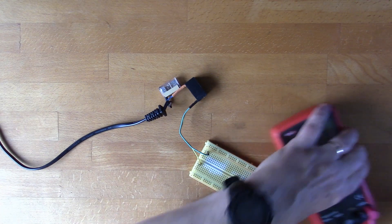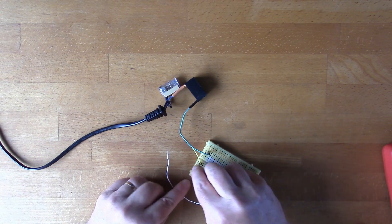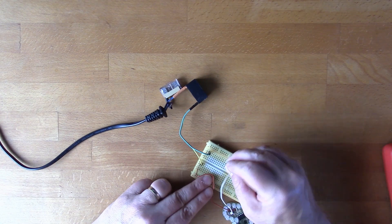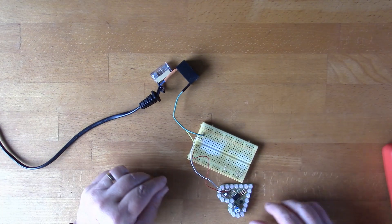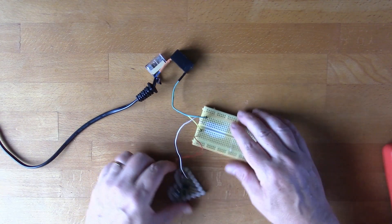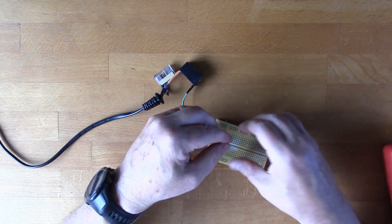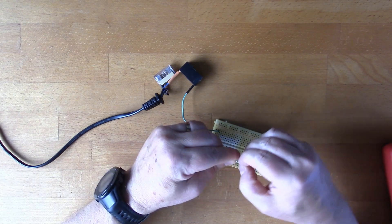OK, so the yellow is positive. There we go, there's a bit of a bent wire there.